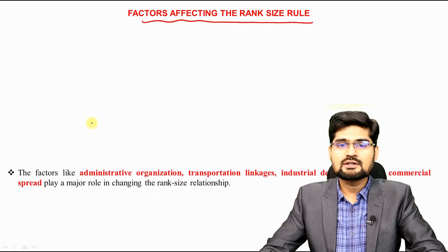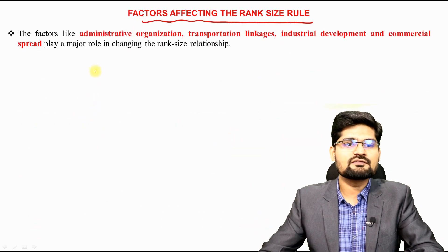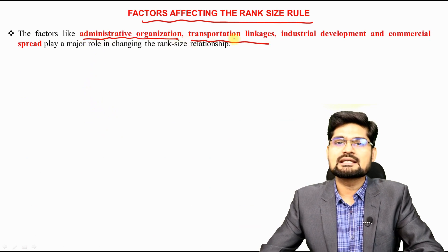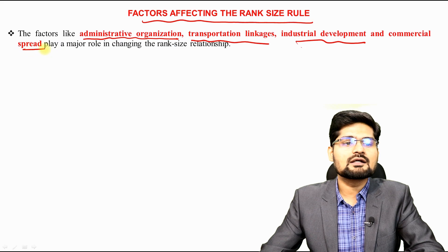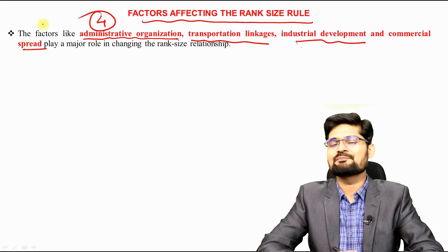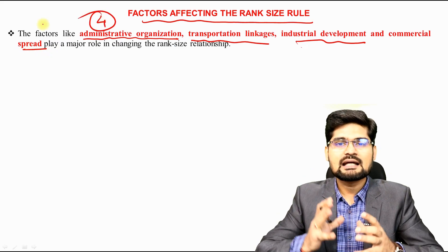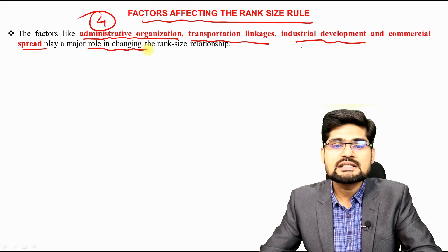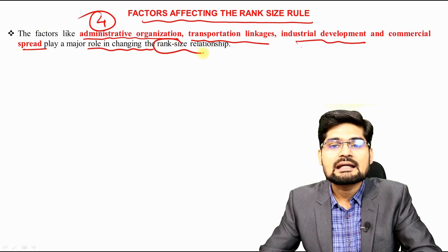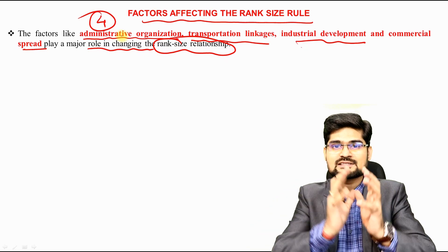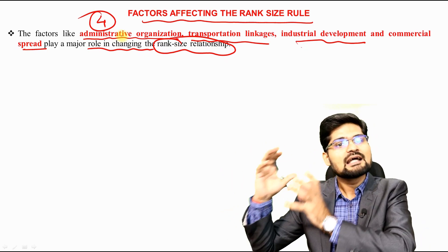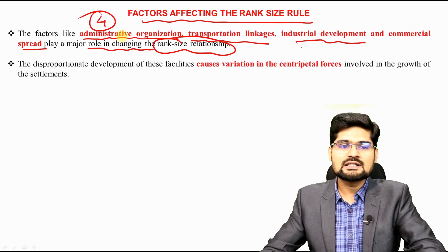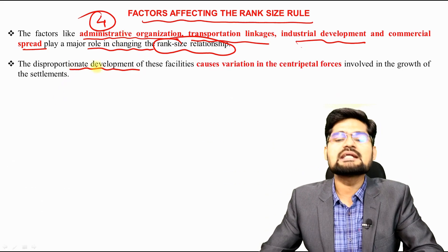The factors affecting rank size rule are administrative organization, transportation linkages, industrial development, and commercial spread. These four things are the major factors that help a city grow and have a major role in changing the rank-size relationship between the first, second, third, and subsequent cities and their linkages.